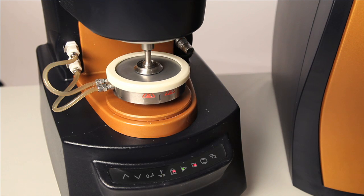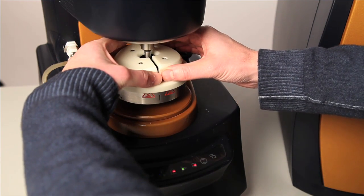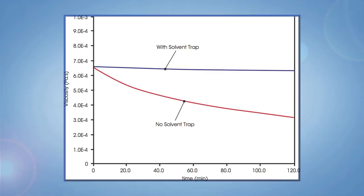The difference between using and not using the solvent trap can be significant, especially on long experiments. The drift of water viscosity over time is due to the reduced amount of water actually closed between the geometry and the Peltier plate.